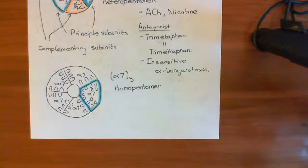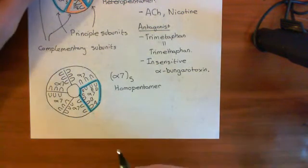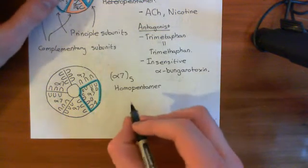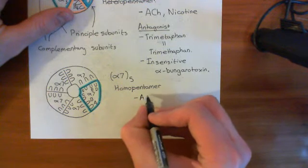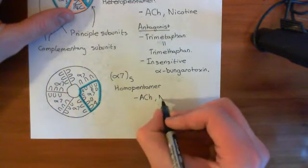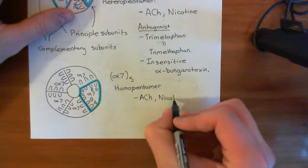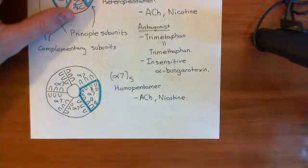So, let's look at the pharmacological agents which interact with this receptor. Agonists for this receptor. Again, the endogenous agonist is acetylcholine, and I've just told you that an exogenous agonist is nicotine, and we think that's very important for the addictive properties of nicotine.